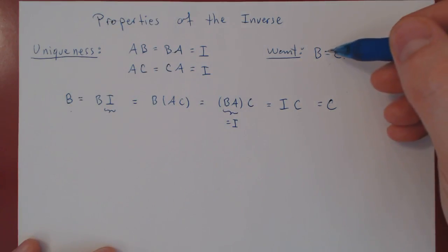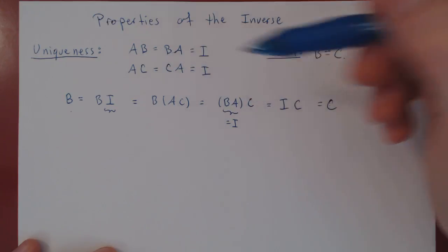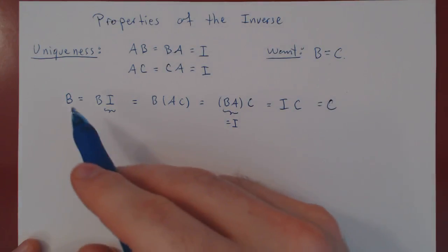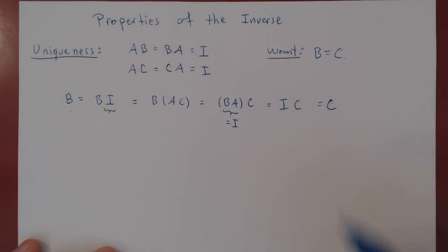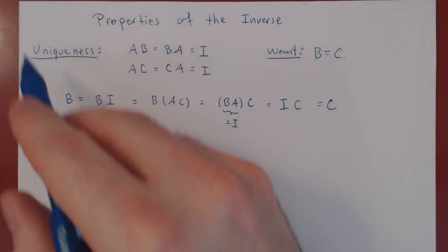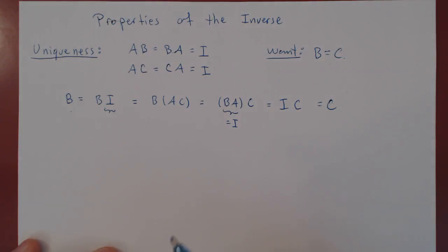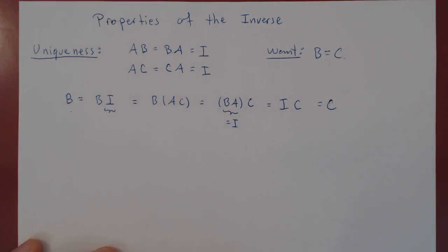So if you take any two inverses of the matrix A, they have to be equal to each other. This concludes our proof of uniqueness — hence, if A has an inverse, its inverse is unique.